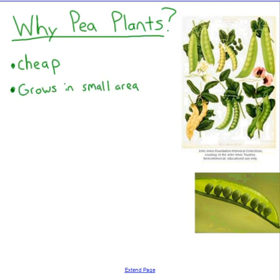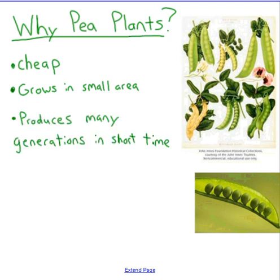Pea plants can grow in a small area. Gregor Mendel lived in a monastery, so it's not like he had a lot of room to work with — he only had a little plot of land to do his studies. They also produce a lot of offspring in a short amount of time. Choosing pea plants, which can create offspring in under a month, is a huge advantage compared to humans, who take 13 to 20 years to reproduce.